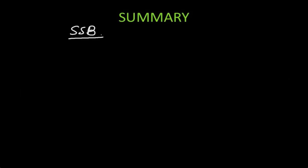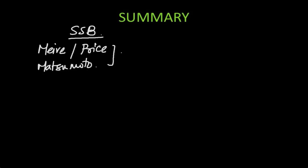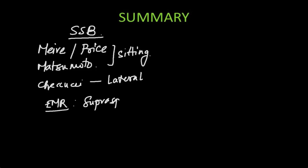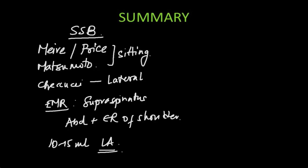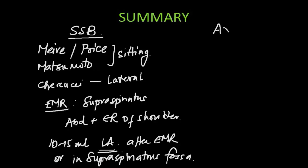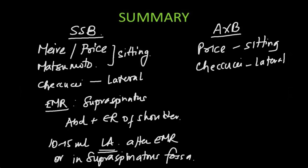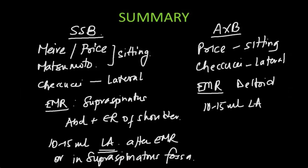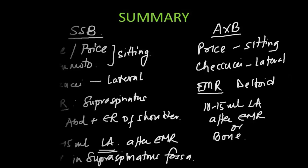To summarize: for the suprascapular nerve block we have the Myers or Price approach and the Matsumoto approach in which the patient is sitting, and the Shiguchi approach in which the patient is in lateral position lying down. The evoked motor response is shoulder abduction and you give about 10 to 15 mls of local anesthetic after getting the evoked motor response. For the axillary block you have the Price approach in which the patient is sitting and Shiguchi's approach in which the patient is lying down. The evoked motor response is a deltoid twitch and you give about 10 to 15 mls of local anesthetic.